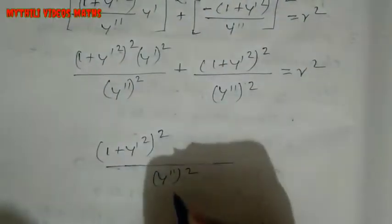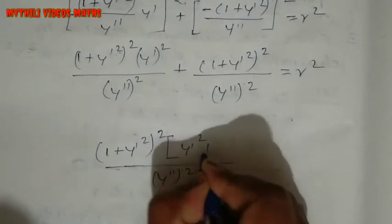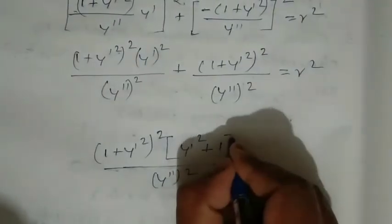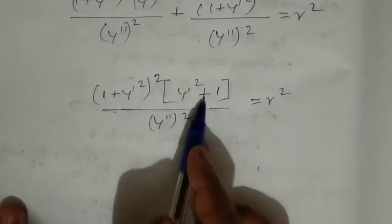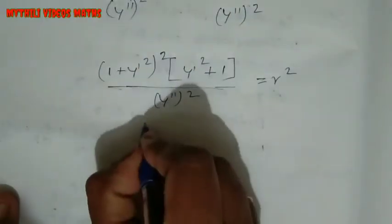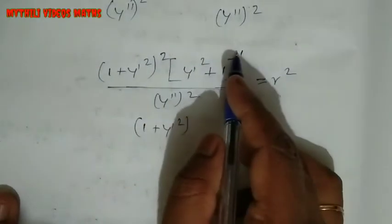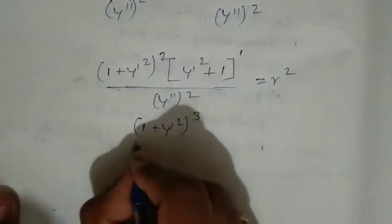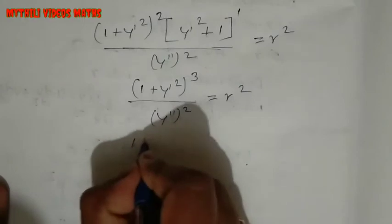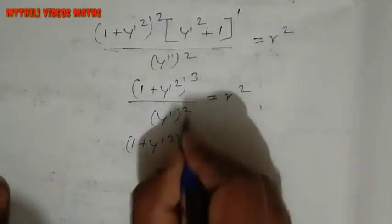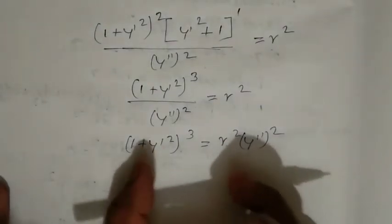Combining the two terms: both have (1 plus y dash squared). The first term has power 2 and the second has power 1. Since the bases are equal, the powers are added: 2 plus 1 equals 3. So we get (1 plus y dash squared) whole power 3, divided by y double dash whole square, equals r square. Cross multiplying: (1 plus y dash squared) to the power 3 equals r squared into y double dash squared.